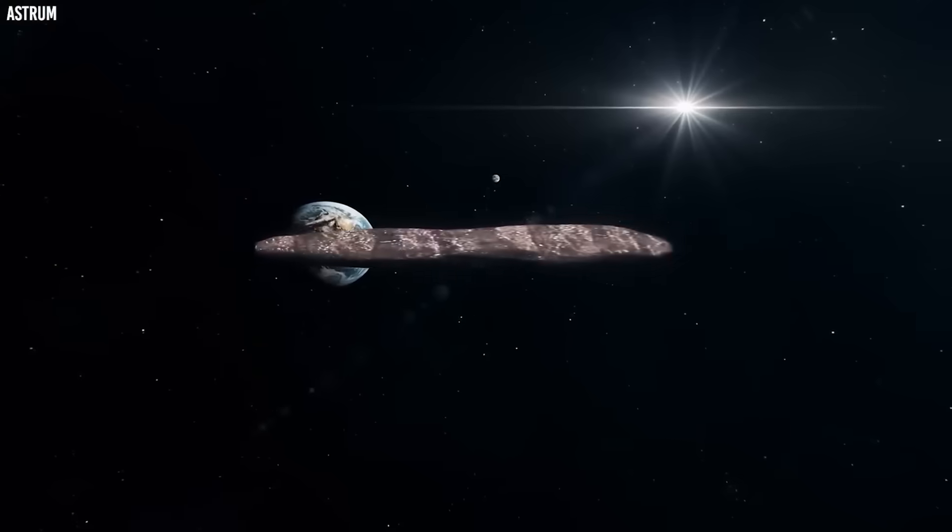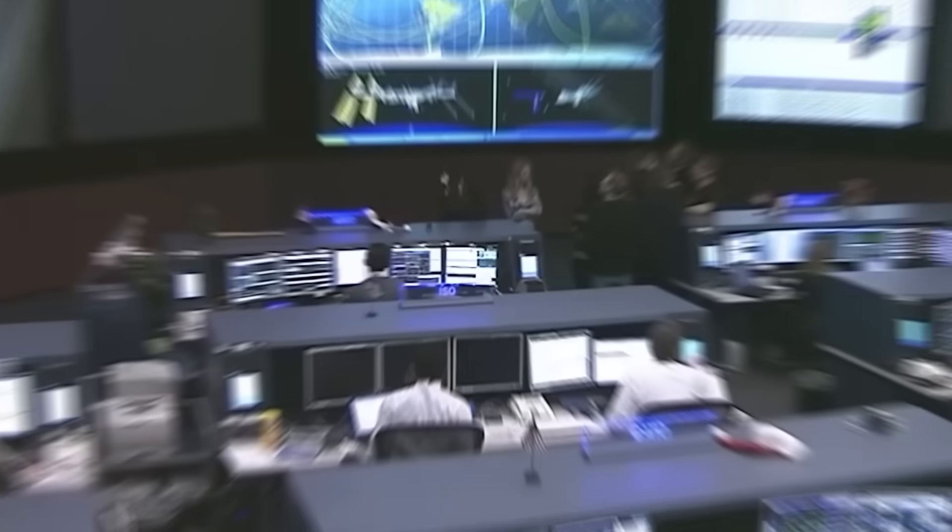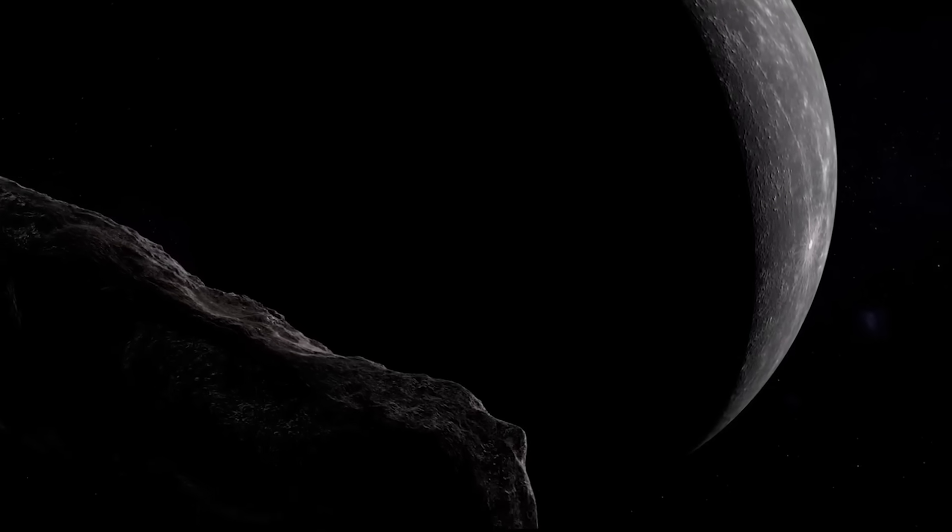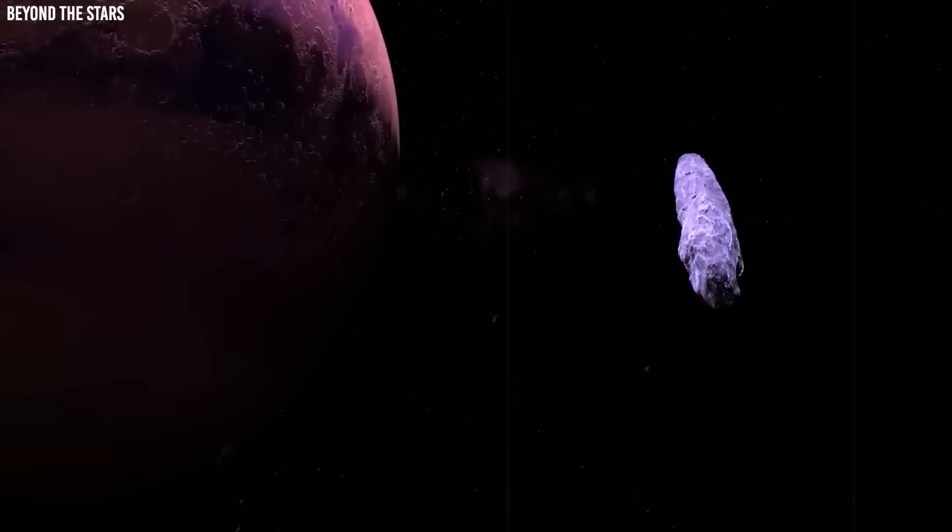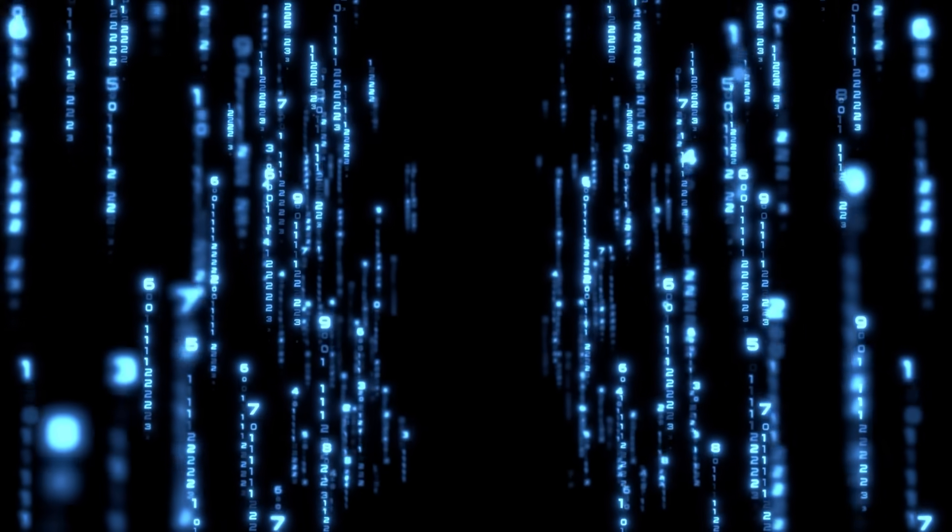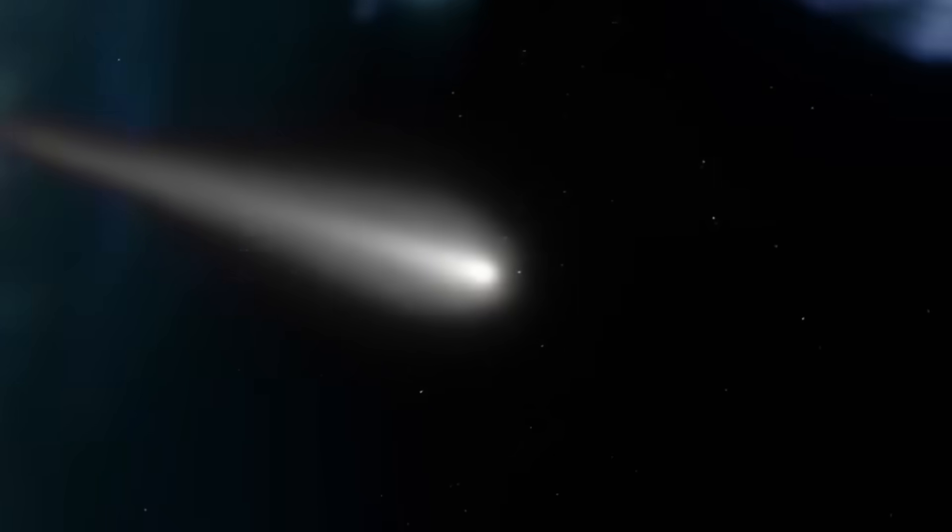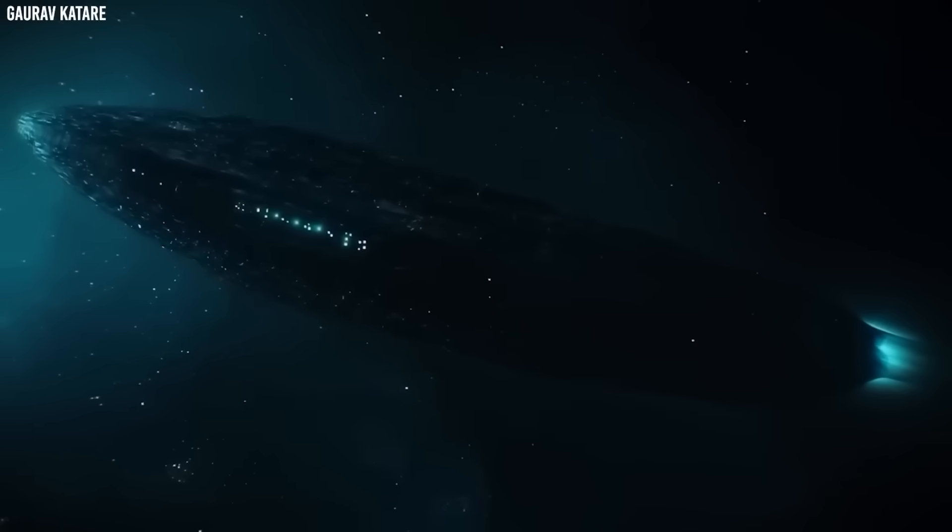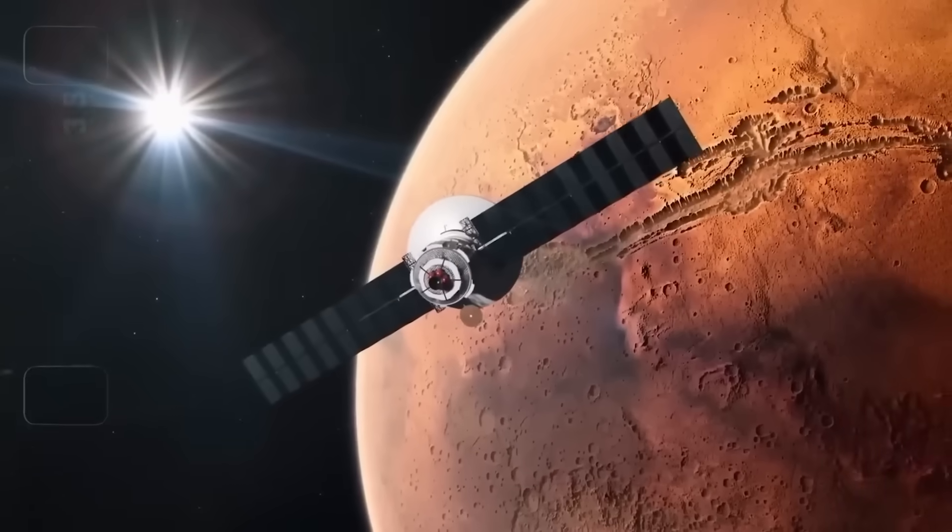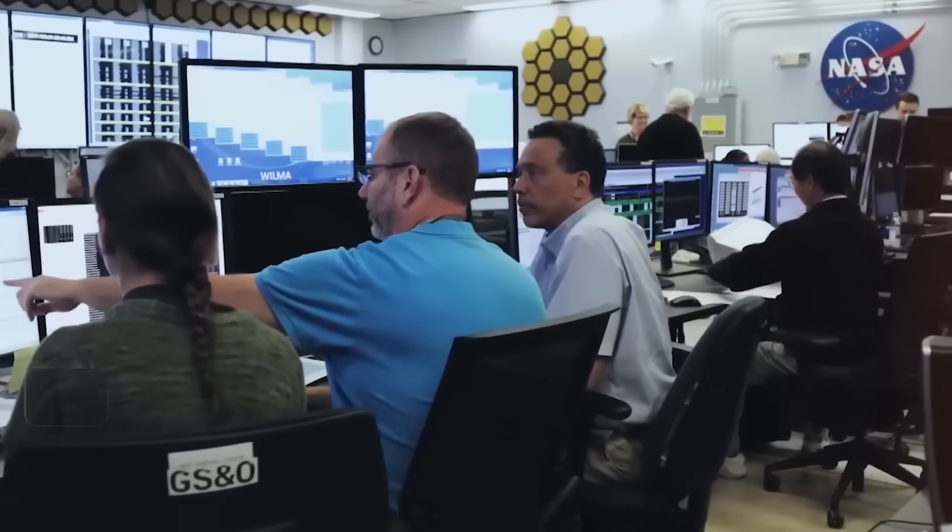So here we stand, months before its closest approach, looking at data from two planets pointing to the same conclusion. Something about 3i Atlas is operating outside the boundaries of known comet behavior. Something about its structure is resisting collapse. Something about its chemistry is rewriting expectations. Something about its emissions is raising questions no one wants to answer in front of a camera. China didn't just confirm the anomaly. They confirmed the fear behind it. That for the first time, we are studying something that doesn't fit. Not because our instruments fail, but because our definitions fail.